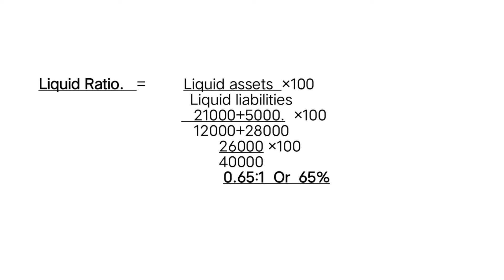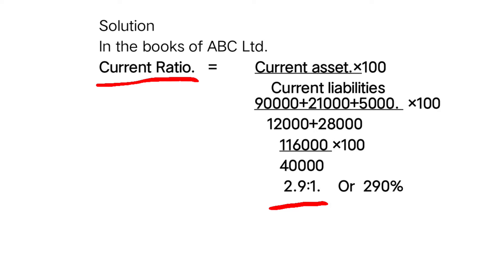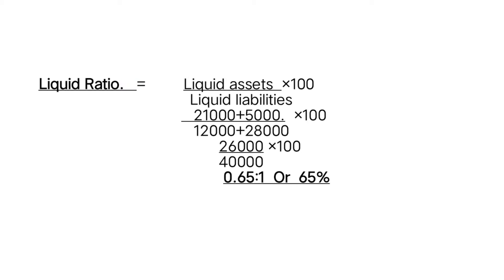Liquid ratio: the difference from current ratio is that we remove stock. Stock of ninety thousand is excluded. So liquid assets are debtors twenty-one thousand plus bank five thousand, giving twenty-six thousand. Divided by current liabilities of forty thousand, the liquid ratio is 0.65:1 or sixty-five percent.